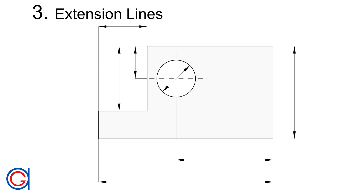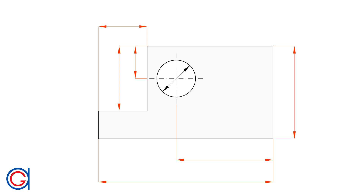Rule number 3: the extension lines, which are the lines that connect the object with the dimension lines, can't finish at the arrowhead or the termination symbol. They must be slightly longer, as shown with the green color on the screen.